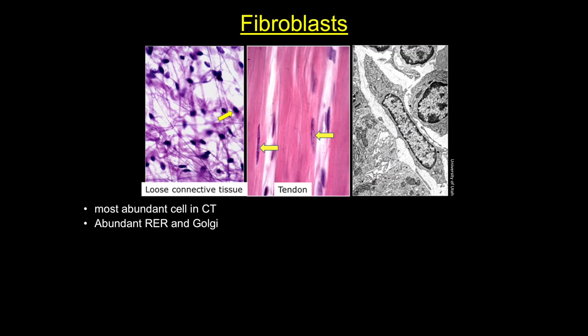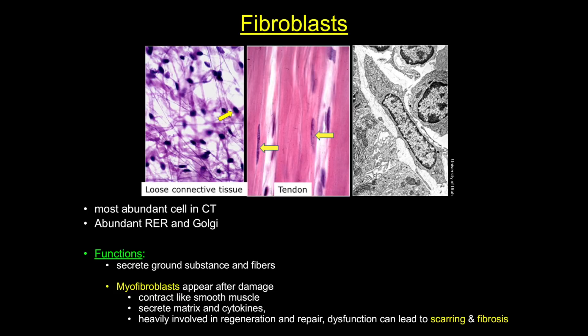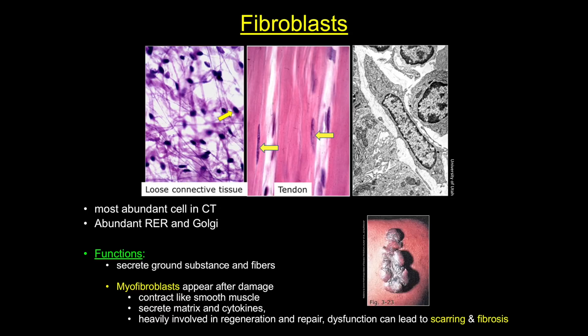Fibroblasts are the most abundant connective tissue cell. They have many functions, some of which we don't fully understand, but these include secreting most of the connective tissue fibers and ground substance. They also have the ability to transform into myofibroblasts after damage, taking on new abilities to contract and secrete matrix and cytokines. These are heavily involved in regeneration and repair. Hyperactivity or dysfunction of fibroblasts can lead to scarring — such as seen in this keloid scar — fibrosis, and disease.